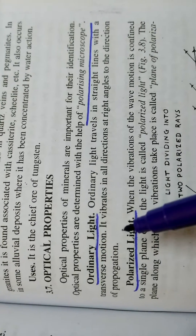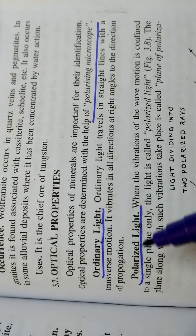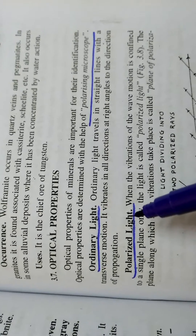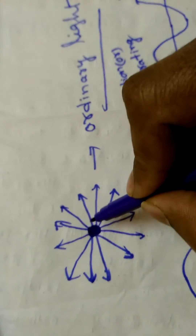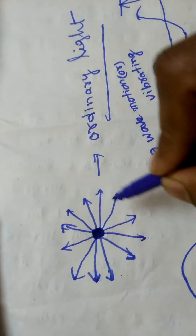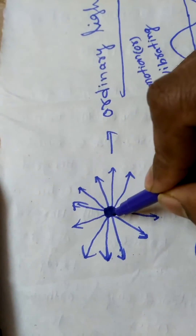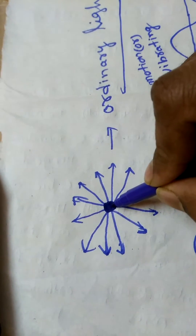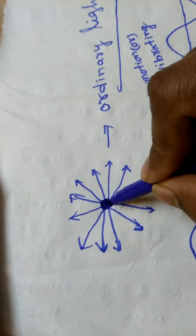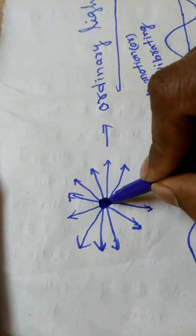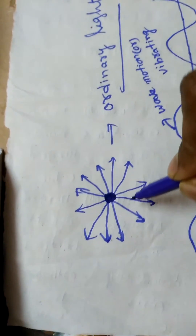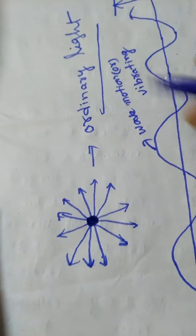In the polarizing microscope, let us observe how ordinary light and polarized light behave. This is the ordinary light. Through this point, light is passing at right angles to the direction of propagation in straight lines. So it is called ordinary light.